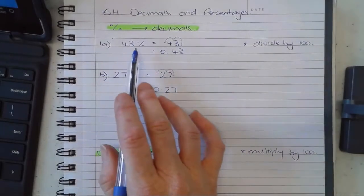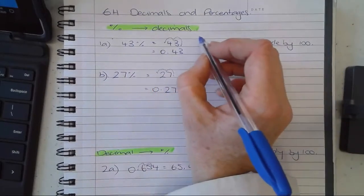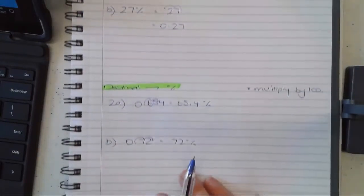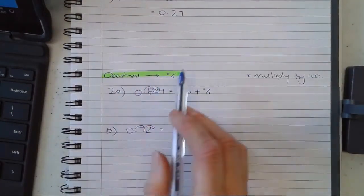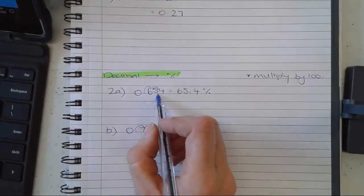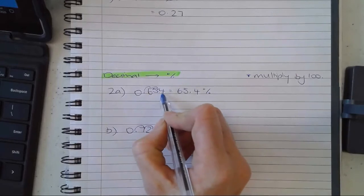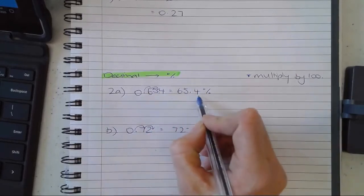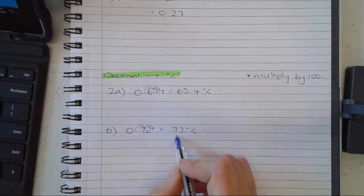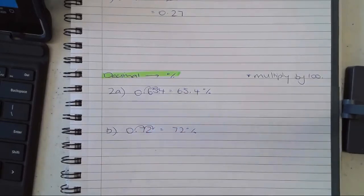And if I'm going from a decimal to a percentage, I times by 100: 1, 2. If you get a three-figure number like this, don't forget you still need to write the numbers after the decimal place - the 0.4 for example. Then 1, 2: 72%. Don't forget the percentage in your answer.